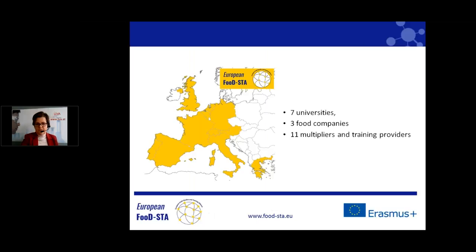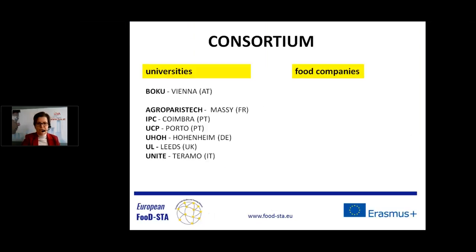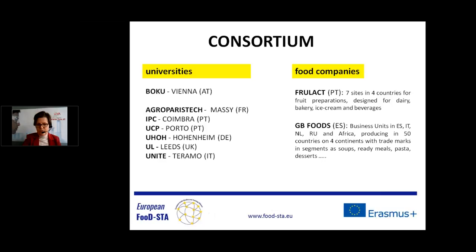The Foodstar project encompasses seven universities, three food companies, and eleven multipliers and training providers in the European countries depicted here. The consortium consists of universities located in Austria, France, Portugal, Germany, the UK, and Italy. Food companies involved are Frulact, GB Foods, and Nestlé.